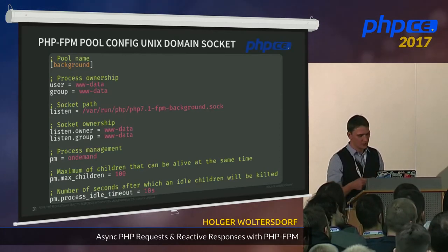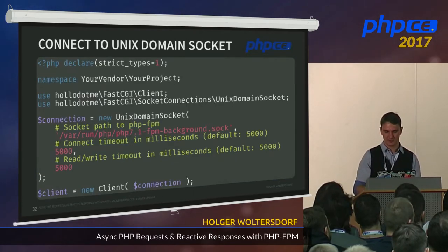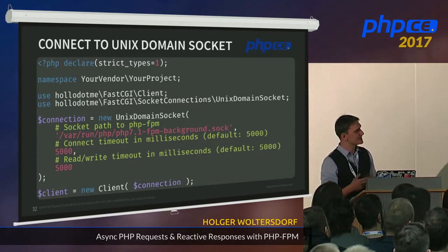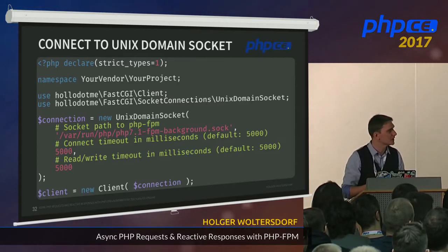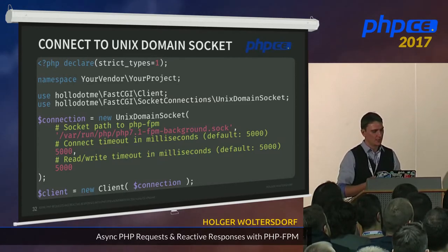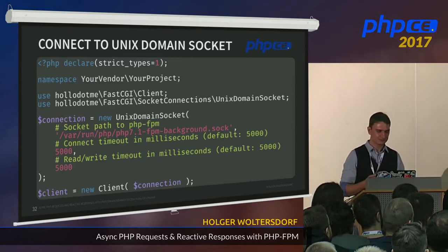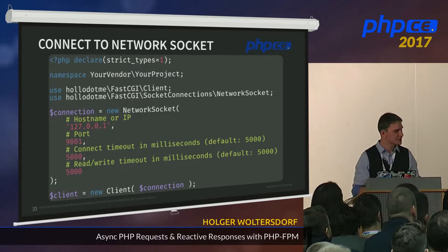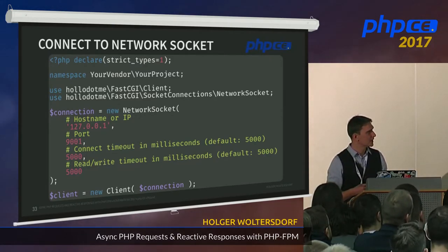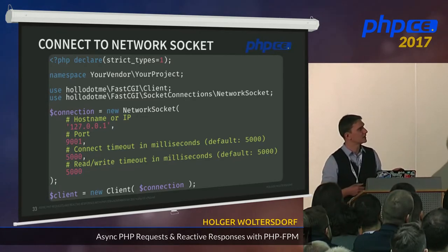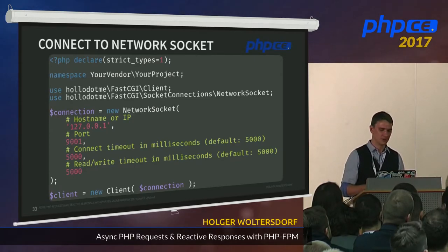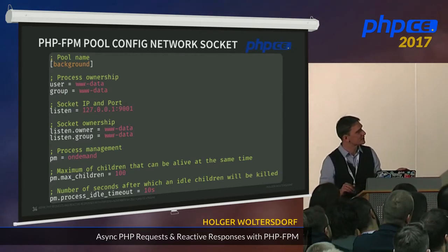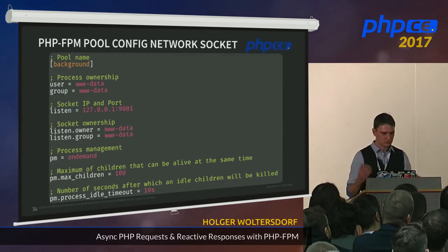Here's how you connect to the new pool with my client. For a Unix domain socket, you instantiate a UnixDomainSocket with the path and read/write and connection timeout settings, then instantiate the client with that connection. For a network socket, you provide an IP or hostname and port — port 9000 is the default PHP-FPM port, so you'd use a different port for your own pool configuration.